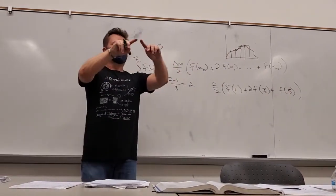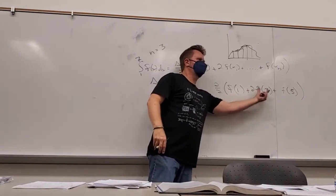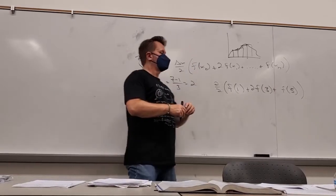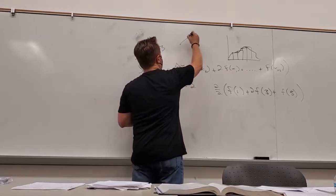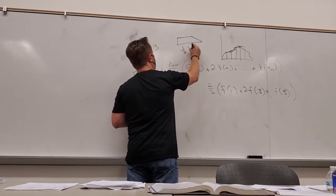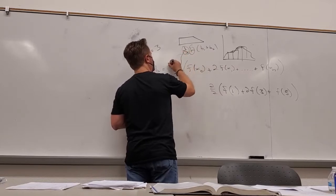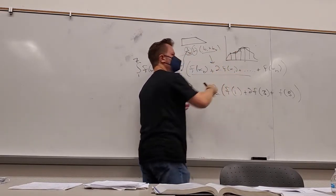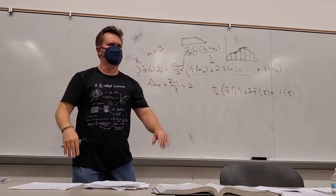You can imagine you'll use more than three trapezoids and have more function values to compute. The reason you have the factor of 2 is because adjacent trapezoids overlap — they share a side. This is the one-half, this is the height, and these are the bases — that's why you get two of the middle terms.